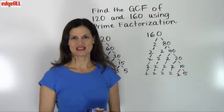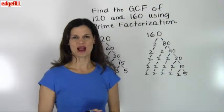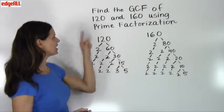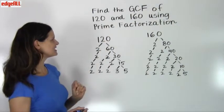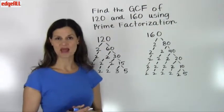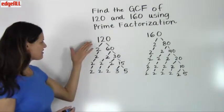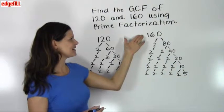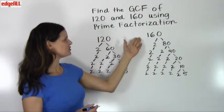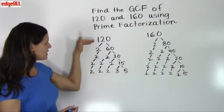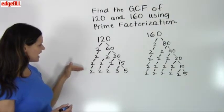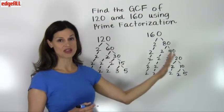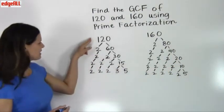Now let's look at an example of finding the greatest common factor using prime factorization. We are asked to find the greatest common factor of 120 and 160. The greatest common factor of two numbers can be found by finding the prime factorization of each and then looking at the prime numbers that are shared by both numbers.